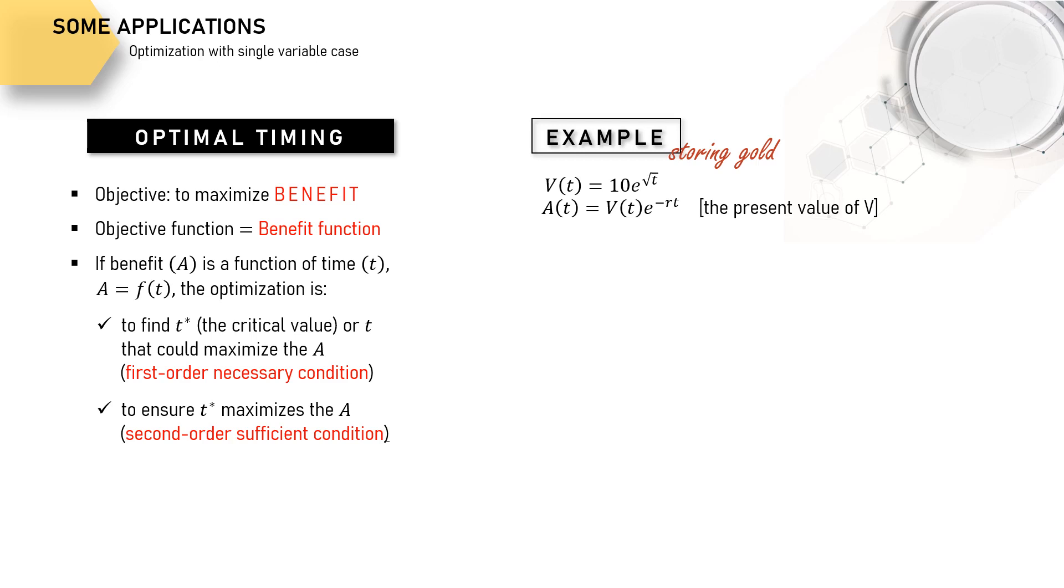Substituting our V function to A, then we get the complete objective function like this. The first order condition requires us to equalize the first derivative of the objective function to zero like this.